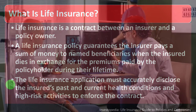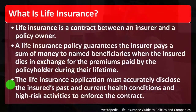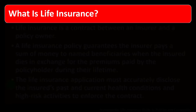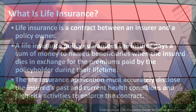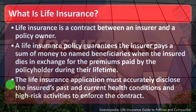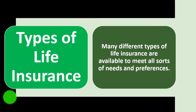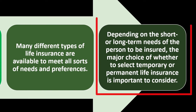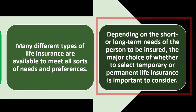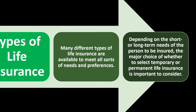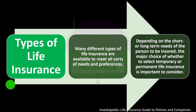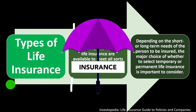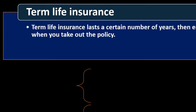Obviously, if you have health conditions making it more likely that you're going to die — if you tend to sleep every night on railroad tracks or something like that — the insurance company might want to take that into consideration and adjust the risk factors. Many different types of life insurance are available to meet all sorts of needs. Depending on short or long-term needs, the major choice of temporary or permanent life insurance is important to consider.